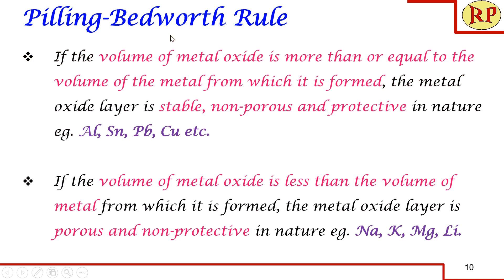This can be explained by Pilling-Bedward's rule. If the volume of the metal oxide is greater than or equal to the volume of the metal from which it is formed, the metal oxide layer is stable, non-porous, and protective in nature. If the volume of the metal oxide is greater, that means it is much denser and much firmer, so it will automatically be a protective layer. This happens in aluminium, tin, lead, copper, etc., as we saw in the previous slide.